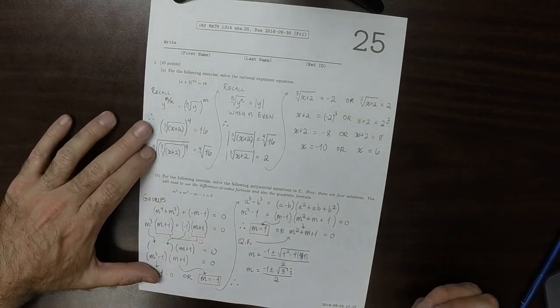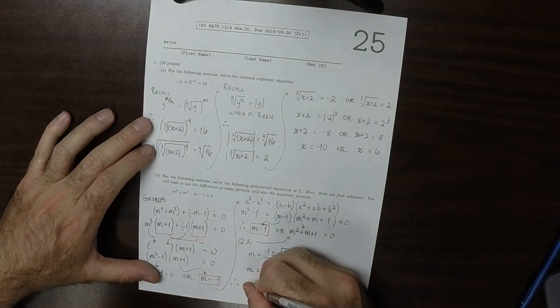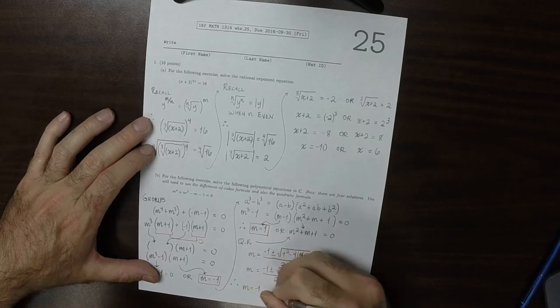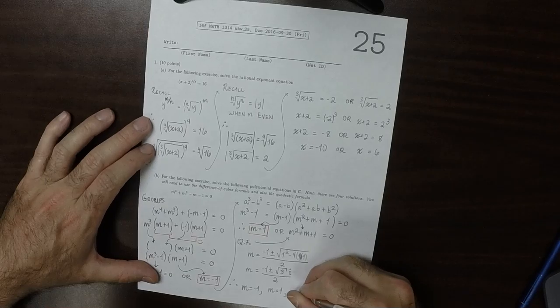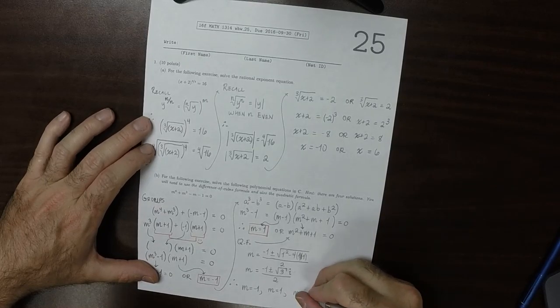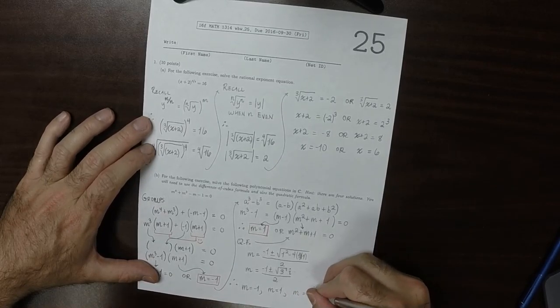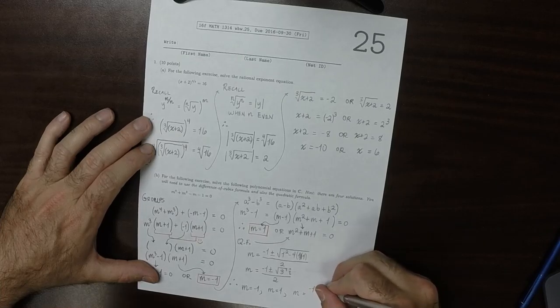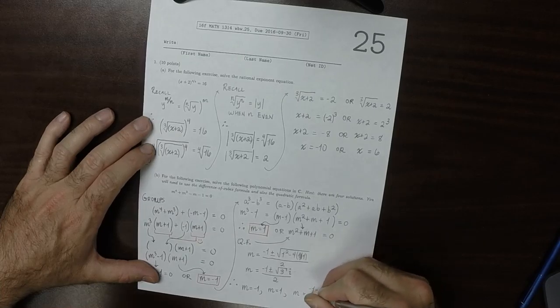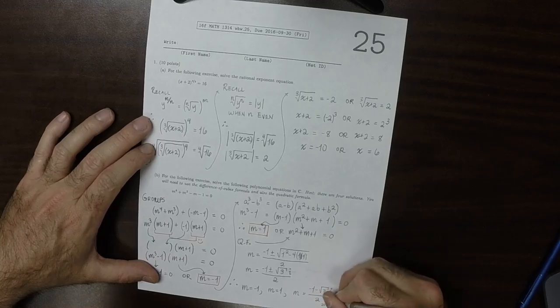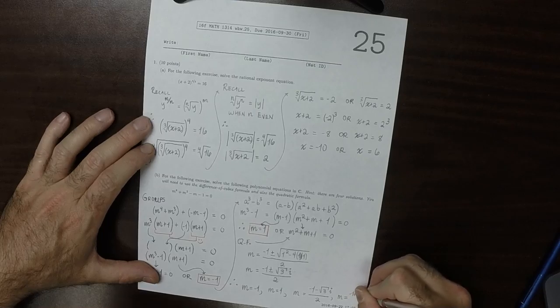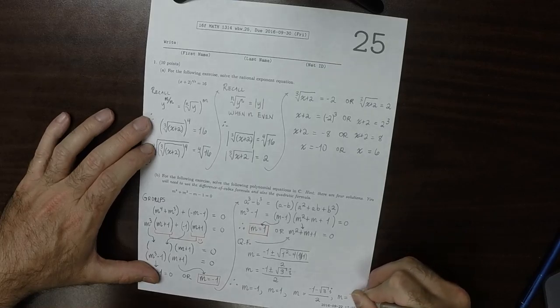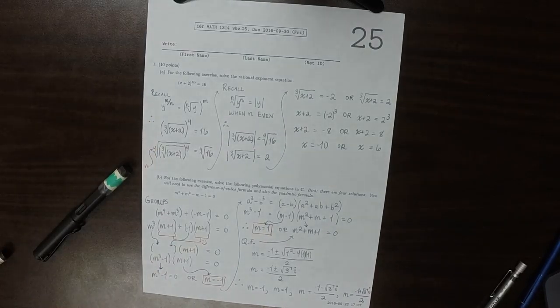So here are the last two solutions. Therefore, the solutions are: m is negative 1, m is 1, m is negative 1 minus square root 3 i over 2, and the other and last one, negative 1 plus the square root of 3 i over 2.